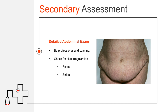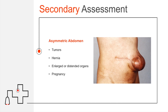Examining the abdomen should involve greater detail because this is a GI concern. Palpate the abdomen and assess for tenderness and rebound tenderness — a distended, hard abdomen indicates possible bleeding or guarding. Check the skin for irregularities: are there scars indicating past trauma or surgery? Do they have stretch marks? Also assess for asymmetry, which could be caused by a tumor, a hernia, enlarged or distended organs, or even pregnancy with an enlarged uterus. The abdomen should normally be fairly symmetrical.